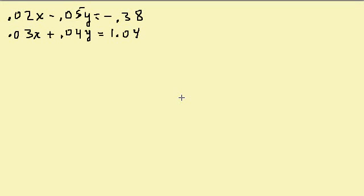This is the second method on solving systems of equations — two equations and two unknowns — using the addition method. Here we have a system with decimals in it, so the first thing we want to do is get rid of all the decimals.